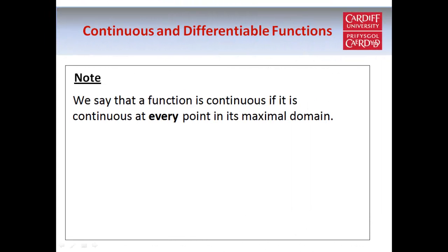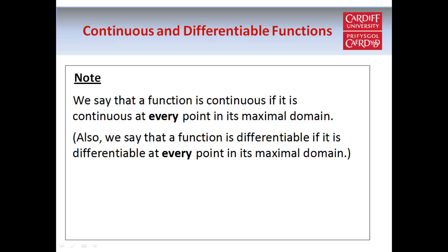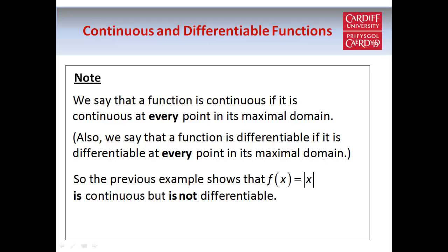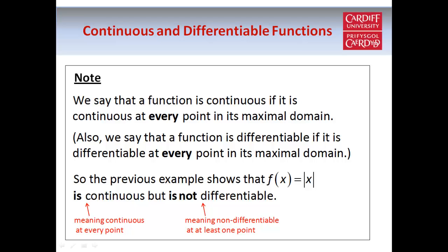Just one more point: we say that a function is continuous if it's continuous at every point in its maximal domain, and similarly it's differentiable if it's differentiable at every point in its maximal domain. So the previous example shows that modulus of x is a continuous function — meaning continuous at every point — but we say it's not differentiable, meaning there is at least one point where the function is non-differentiable. Even though it is differentiable at every point other than zero, that one point where it isn't differentiable means it's not what we refer to as a differentiable function. In the third part of this tutorial, we'll have a look at some theorems for continuous and differentiable functions and some further examples.